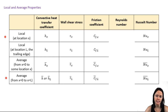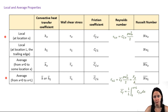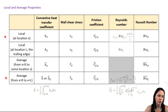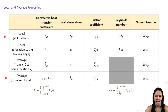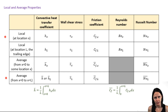We can also extend this to the shear stress and the friction coefficient. You can define a local shear stress as a function of the local friction coefficient, or you can talk about things in terms of averages. Our Reynolds number is calculated at a certain location x, and we'll use it to define the point at which the transition to turbulence occurs. It doesn't really make sense to talk about an average Reynolds number.